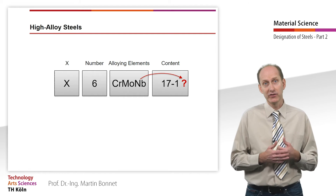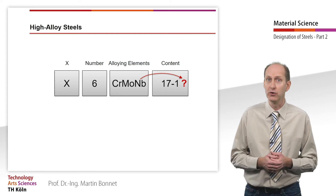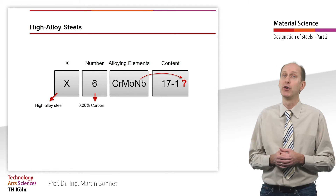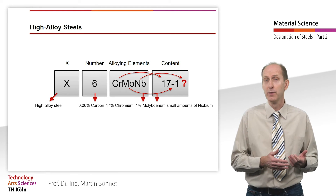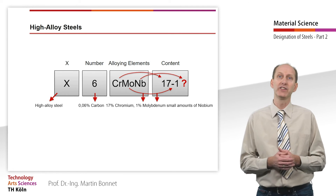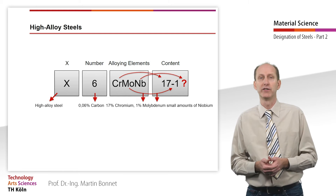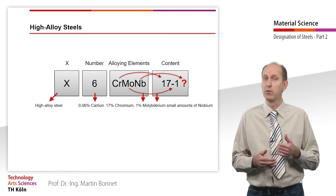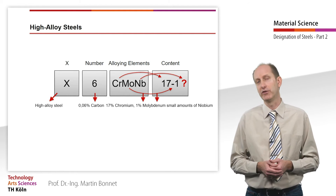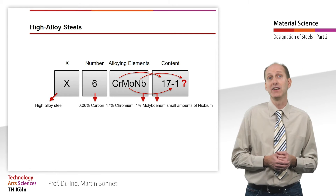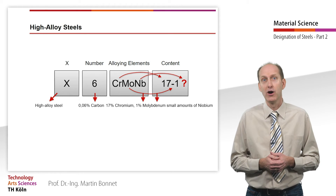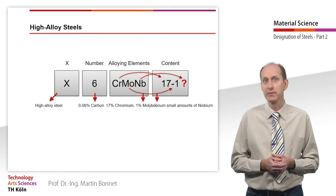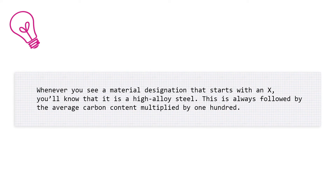Accordingly, the designation X6CrMoNb17-1 denotes a high alloy steel with an average carbon content of 0.06%, 17% chromium, 1% molybdenum and, according to the standard, small amounts of niobium. According to the standard, this high alloy steel contains at least seven times the carbon content plus 0.1% niobium and a maximum of 1% niobium, which means 0.52 to 1%. The reason why some steels contain alloying elements such as chromium, molybdenum or niobium at all will be explained in following videos on the categorization of steels, high alloy steels and on corrosion. Whenever you see a material designation that starts with an X, you know that it is a high alloy steel, always followed by the average carbon content multiplied by 100.